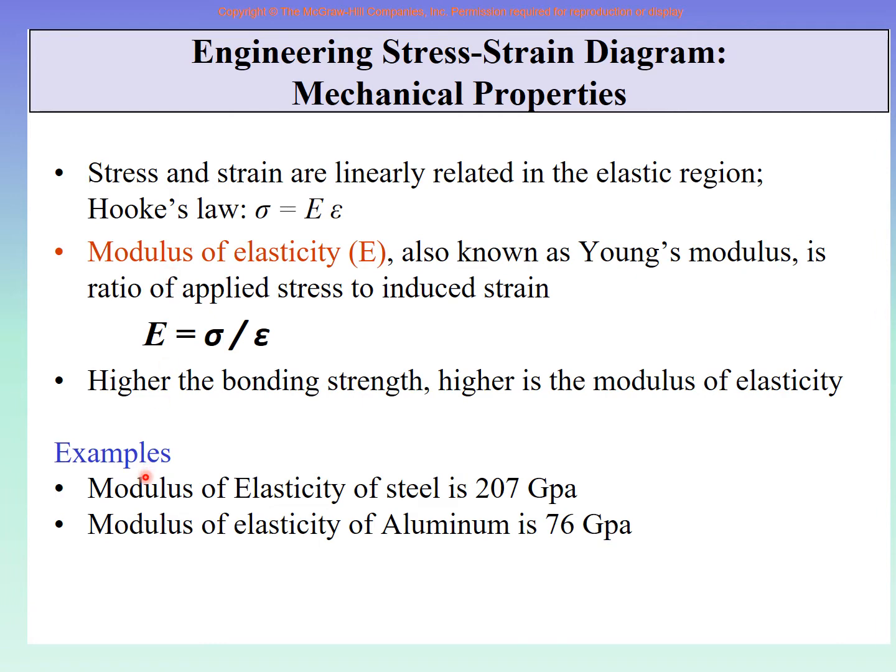As an example general steels all steel low strength to high strength. This modulus is about 207 gigapascal. Remember 10 raised to 9 very high value. For aluminum and aluminum alloys it is about 76 gigapascals.